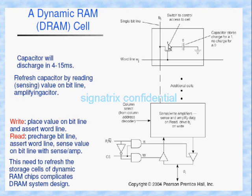This is a bit line and this is a word line — we have to differentiate these two. The base of this transistor is connected to the word line, and this is the bit line. We also have sense and write amplifiers, the same as we have seen in SRAM, and below that we have the logic for chip select and read/write select.